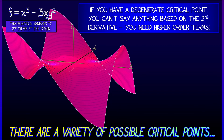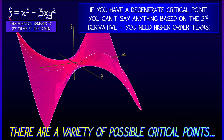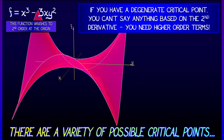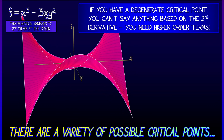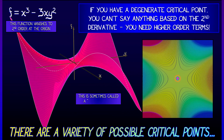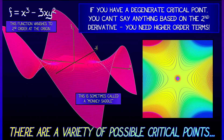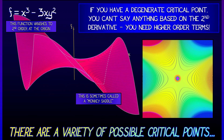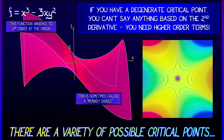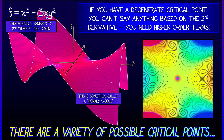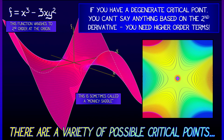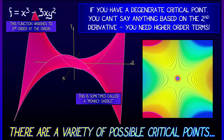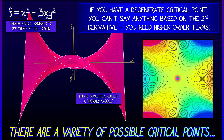But if we take a look at what happens, it's as if that critical point is really flattened out there. In this case, the cubic order terms determine it, and you could look at, say, a contour plot. This is sometimes called a monkey saddle — it's a little bit like a generalized saddle point, but it's kind of weird. And there are weirder things still that one can get.